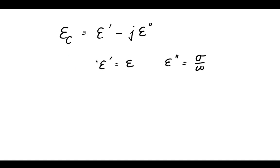And it's epsilon prime minus j epsilon double prime, where epsilon prime is equal to epsilon. This is the epsilon that we all know and love that we've used many times. Whereas epsilon double prime is the sigma over the omega. So, epsilon double prime is actually related to both the conductivity of the material as well as the frequency.